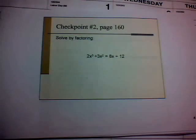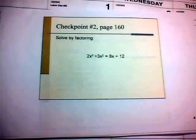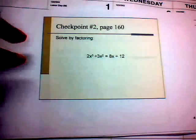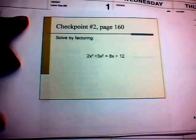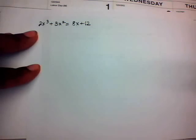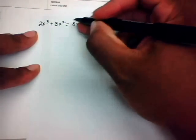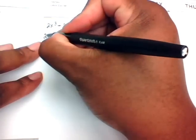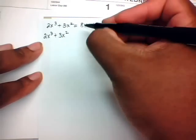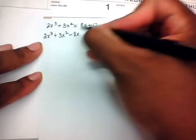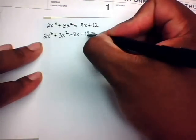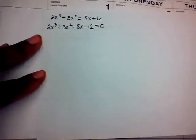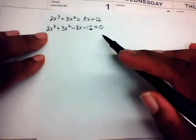Let's look at another example: solve 2x³ + 3x² − 8x + 12 = 0 by factoring. We need zero on one side, so we move the 8x and 12 over: 2x³ + 3x² − 8x − 12 = 0.